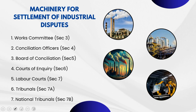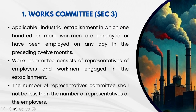Let us understand the machinery for the settlement of industrial disputes — the theme of today's lecture. The different machineries that exist within the ambit of this act are: Works Committee under section 3, Conciliation Officers under section 4, Board of Conciliation under section 5, Courts of Enquiry under section 6, Labour Courts under section 7, Tribunals under section 7A, and National Tribunals under section 7B.